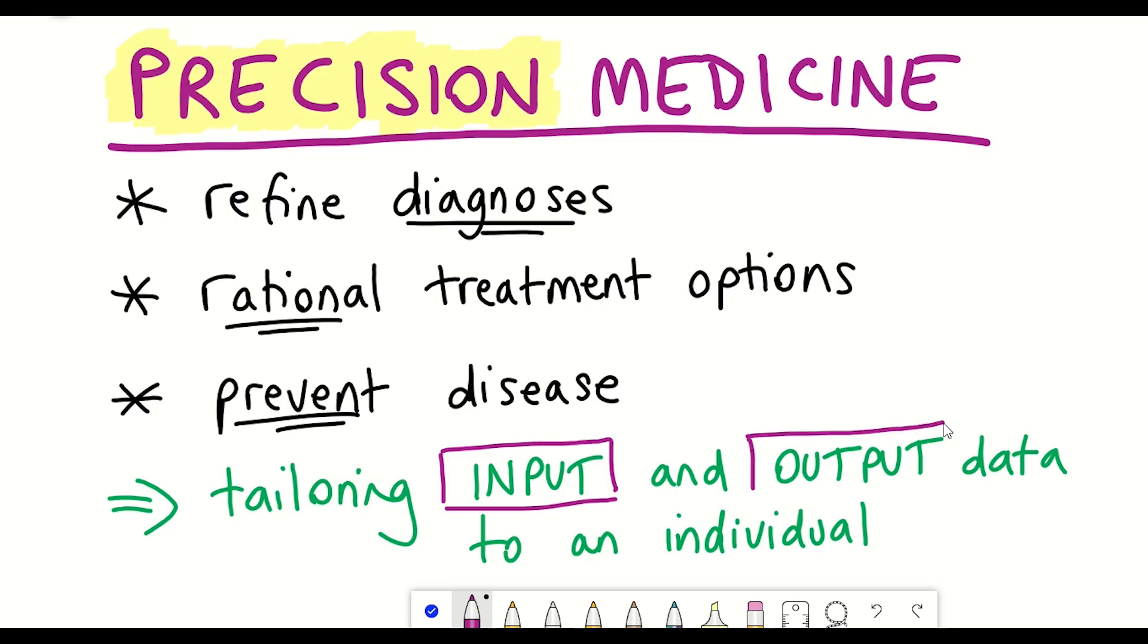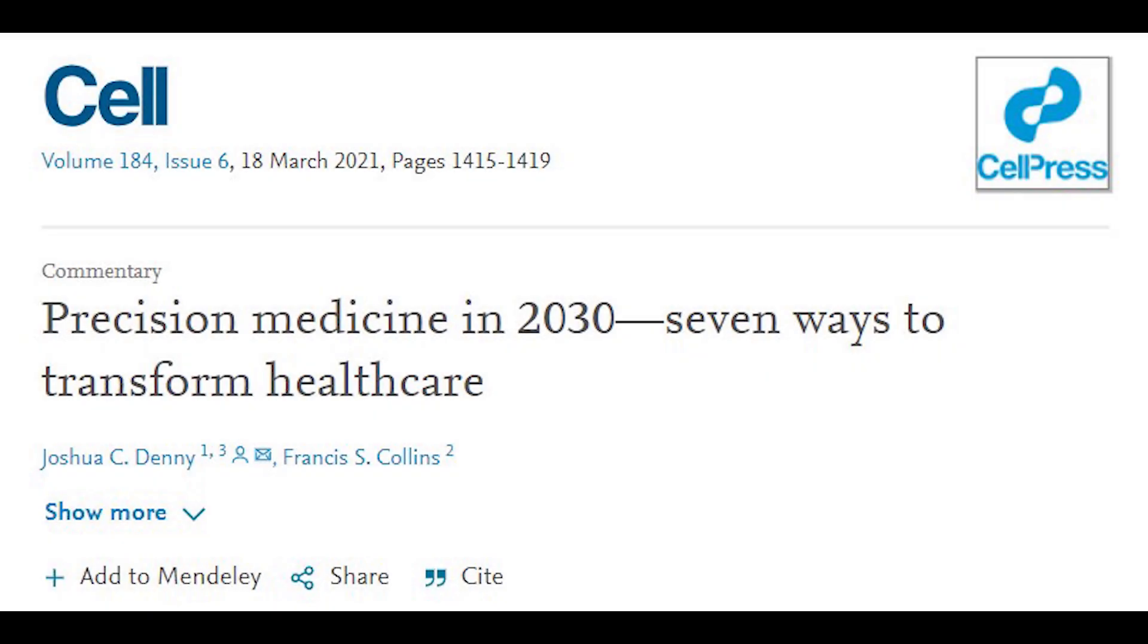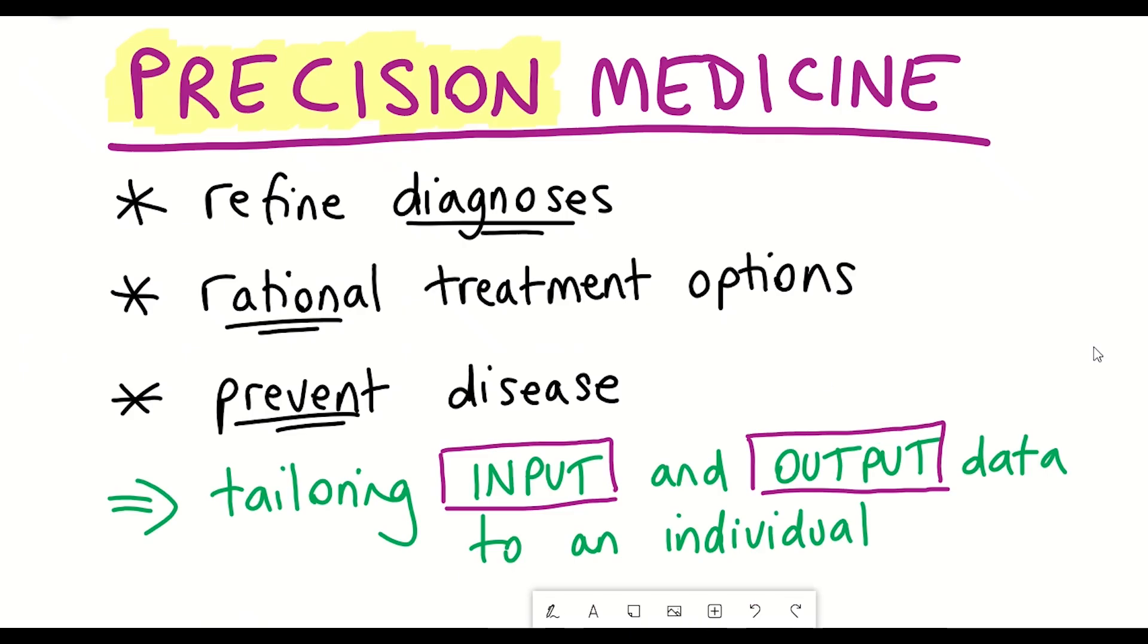So what will it take to achieve precision medicine by 2030? Well, in this recent article, there are seven key opportunities that are outlined, as we'll now discuss.